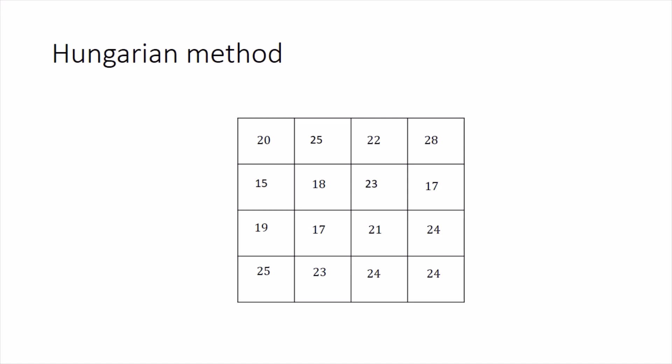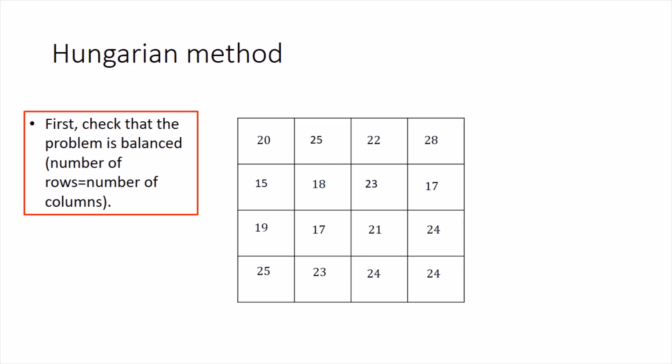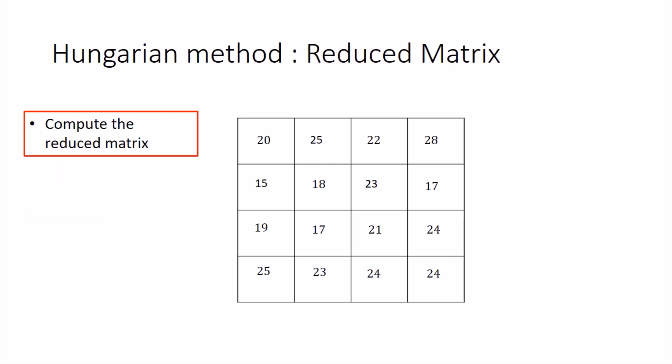The first step is to check whether the problem is balanced or not — it should be a square matrix, with the number of persons equal to the number of jobs. Here we have four persons and four jobs, so this is a balanced problem. The next step is to compute the reduced matrix.